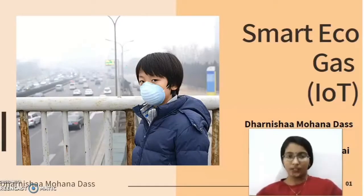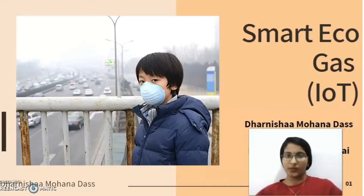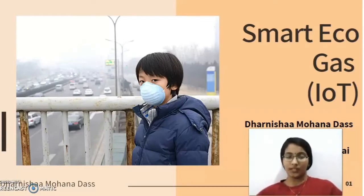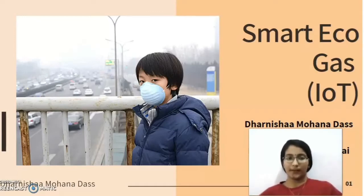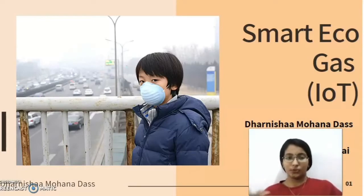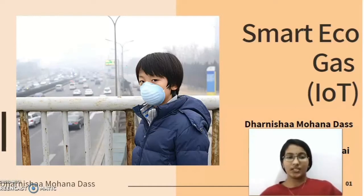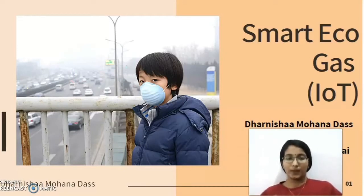Smart Echo Gas is an IoT project which is built with IoT devices and it will detect dangerous gas among the surroundings. For example, it will detect CO2 — carbon dioxide. When the system reads the surrounding, it will show CO2. Not all dangerous gases are detected in my system; certain important gases are detected in my device.